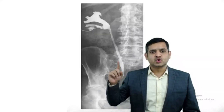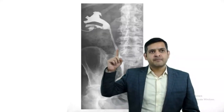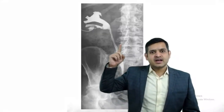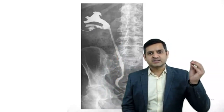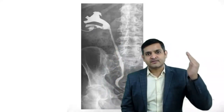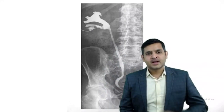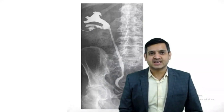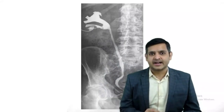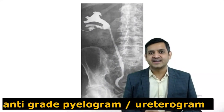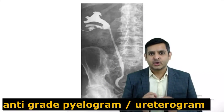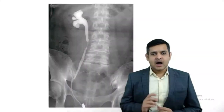If you see a tube in the upper calyx through which there is opacification of the ureter, remember the dye has been injected from the top — this is a case of antegrade pyelogram or antegrade ureterogram.